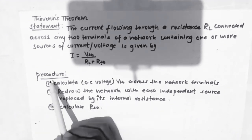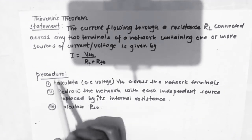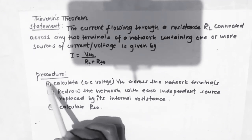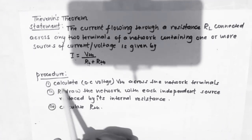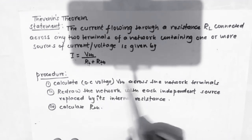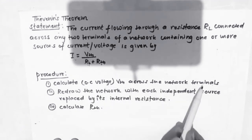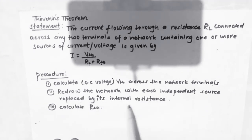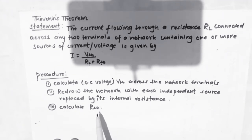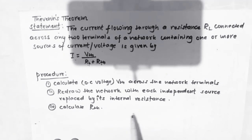Here we have the procedure to calculate Thevenin's equivalent. We have three steps altogether. First step is to calculate the open circuit voltage, VTS, across the network terminals. Then we redraw the network with each independent source replaced by its internal resistance. Finally, we calculate RTS and draw the Thevenin's equivalent circuit.